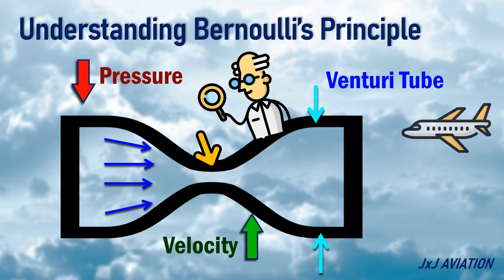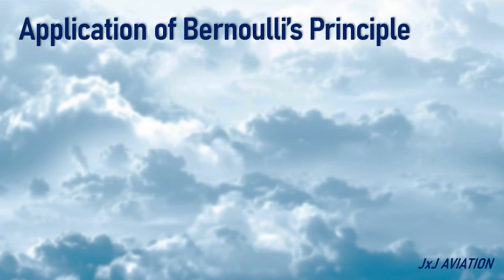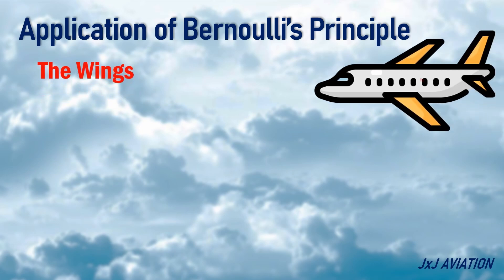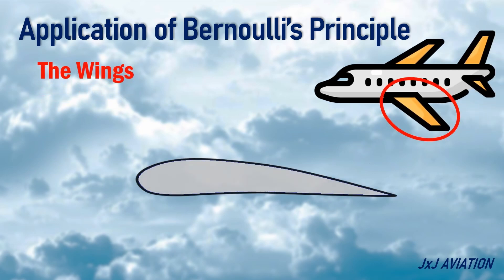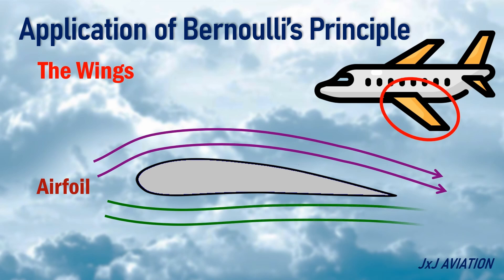Let's see how this principle is applied on different parts of an aircraft. The Wings: the cross-sectional shape of an aircraft wing is called an airfoil. The airfoil shape causes the air flowing over the top surface to move faster than the air flowing under the bottom surface.